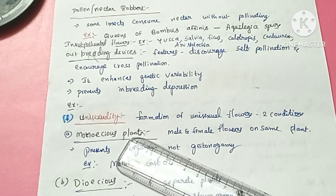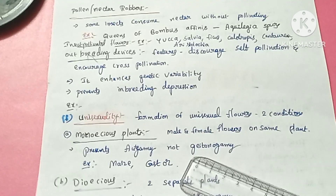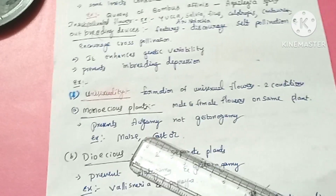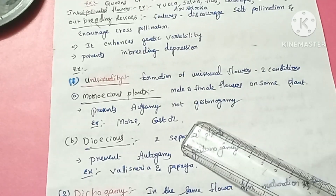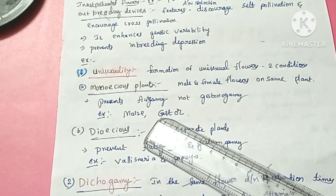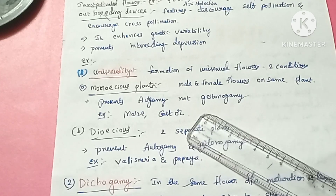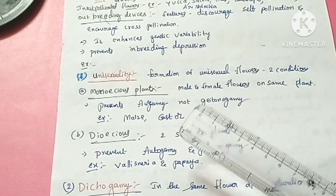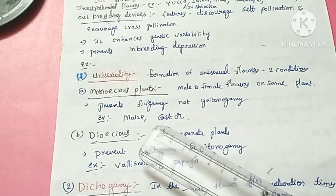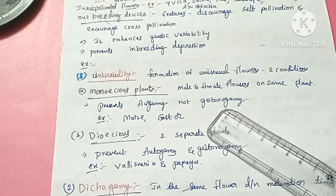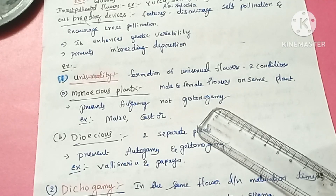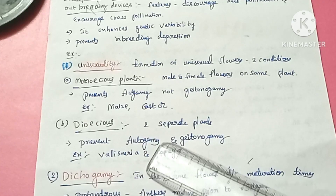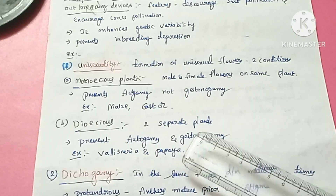The first outbreeding device is unisexuality — the formation of unisexual flowers. Here we have two conditions: monoecious plants, where male and female flowers are on the same plant; and dioecious plants, where male and female flowers are on separate plants of the same species, which increases genetic variability.